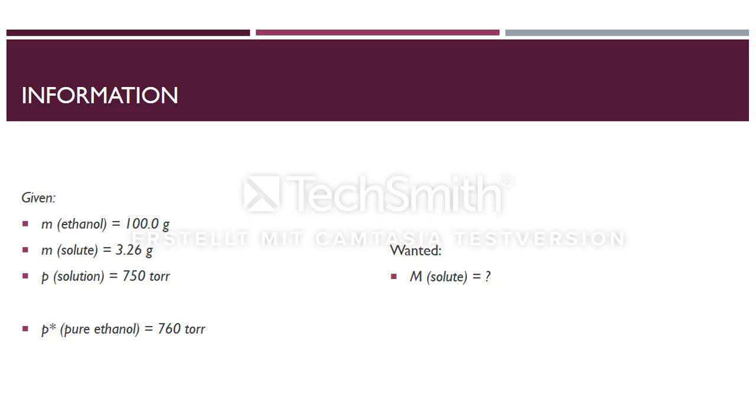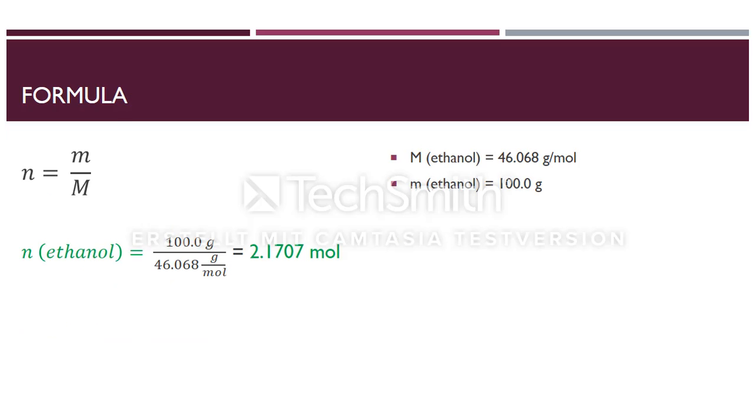Of course our wanted information is the molar mass of the solute. First we have to calculate the number of moles of ethanol. Therefore we can use this formula. The mass divided by the molar mass of ethanol equals the number of moles. The result of the number of moles for ethanol is then 2.1707 moles. Therefore you just need to look up the molar mass of ethanol, which you can do in the periodic system.